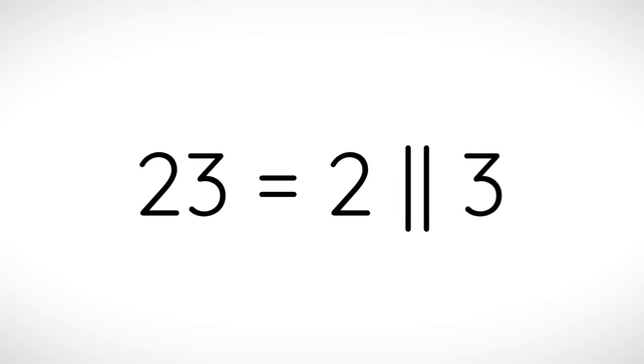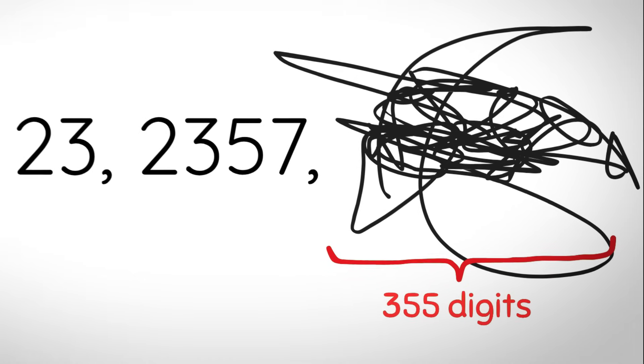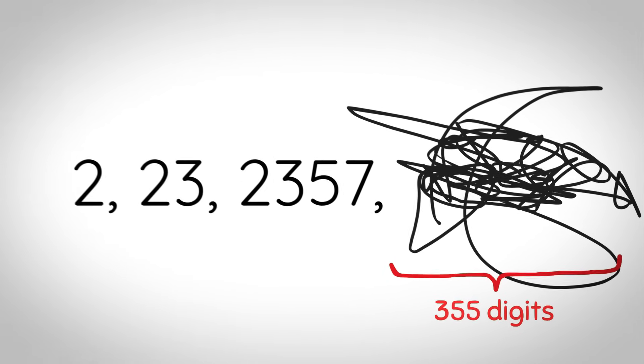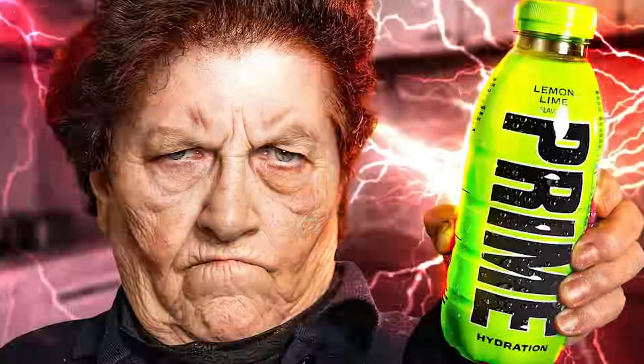Smarandache-Wellin primes: these are the primes which are the concatenation of the first n primes. So for example we have 2, 23, 235, 2357, and then the next one after this is 355 digits long and it's a concatenation of the first 128 primes. The Newman-Shanks-Williams numbers are just Pell numbers but starting with 1, 1 instead of 0, 1. Some of these are prime.